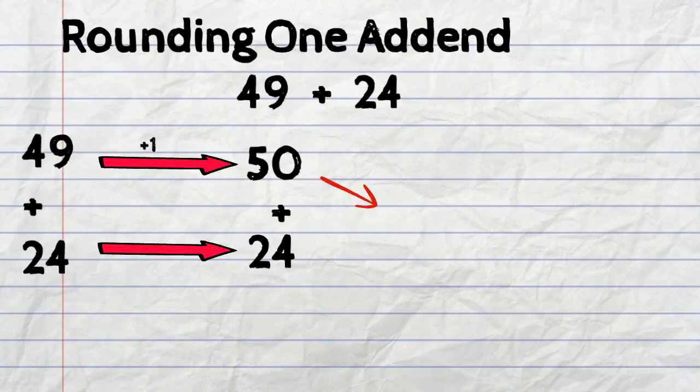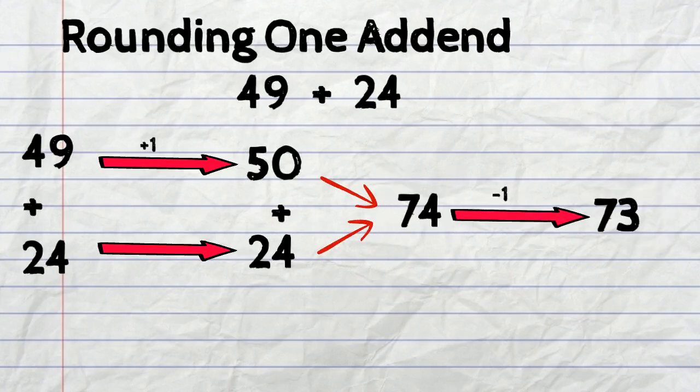So the final answer would be 74 minus 1 which is the one that we added to 49 to round it to 50. So 74 take away 1 equals 73 and that's our final answer.